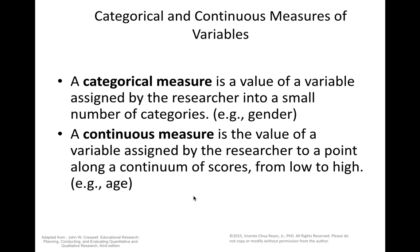When we take a look at variables from the perspective of being a measure, we usually describe them as either categorical or continuous. A categorical measure is a value assigned by the researcher into a small number of categories — for example, gender, divided into male and female. A continuous measure is a value assigned to a point along a continuum of scores from low to high — for example, age, where one could be 15 years old and another 95 years old.